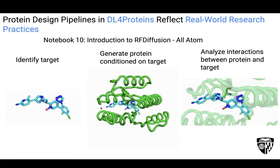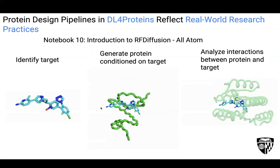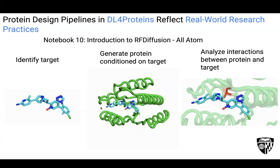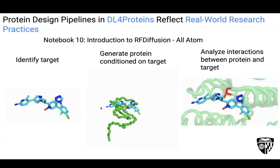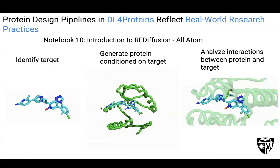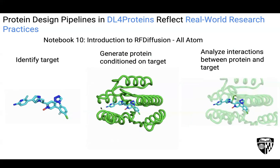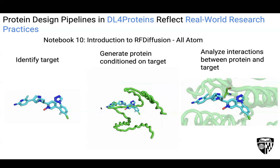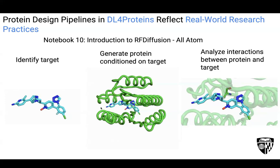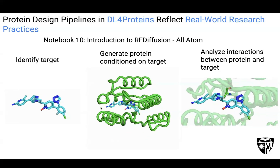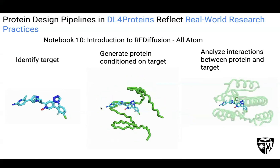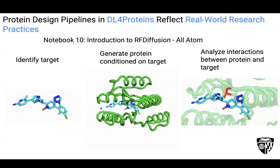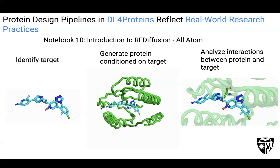We also present a newer form called RF Diffusion All-Atom, which has been trained on a larger array of biomolecules including canonical amino acids, non-canonical amino acids, metal ions, covalently bonded residues, and small molecules. This notebook is applicable to scenarios like designing a binder for a toxic molecule to neutralize it so it can no longer interact with molecular components in someone's body. We show how to use RF Diffusion All-Atom to generate such a binder and identify key interactions between the generated protein and the target — all within the tenth notebook in Colab.